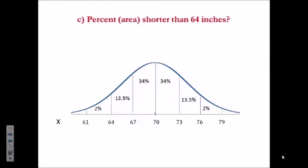What percent of the Danish men are shorter than 64 inches? 64 inches. Shorter than means less than 64 inches. So we're looking for the area of this left tail. Well, the area of the left tail is 2 percent.